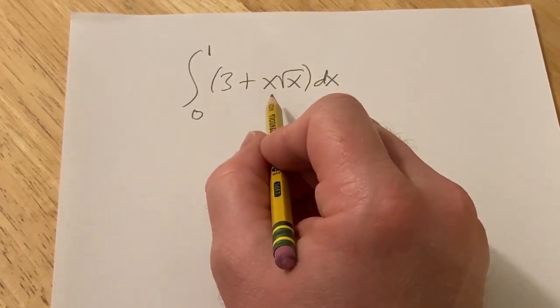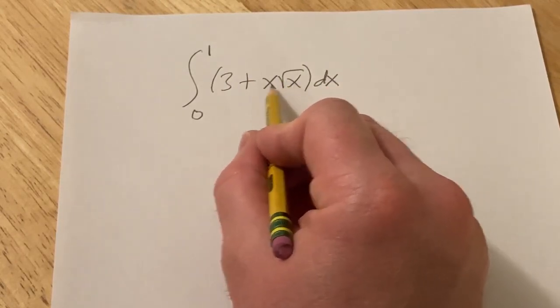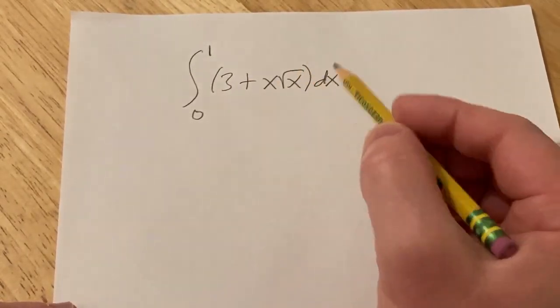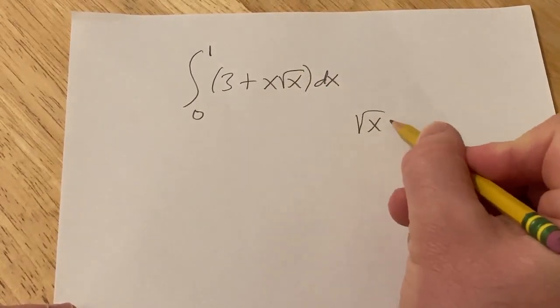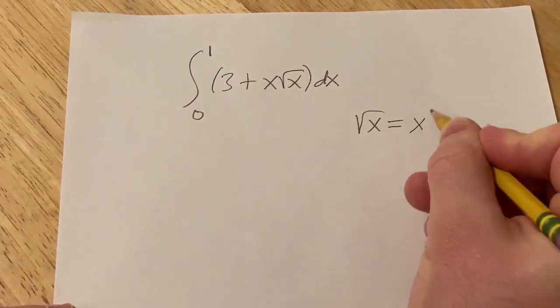Before we do it, we're going to have to simplify this a little bit. We want to write everything as x to a power, so note that the square root of x is the same thing as x to the 1/2.